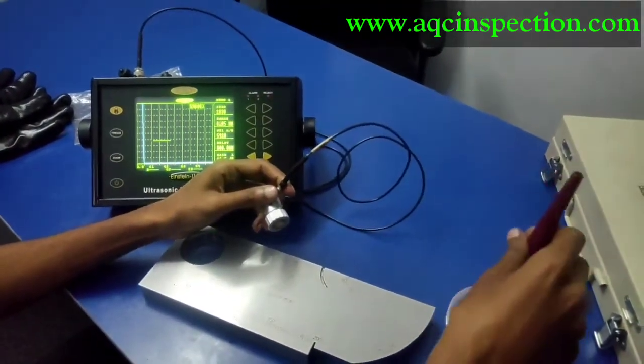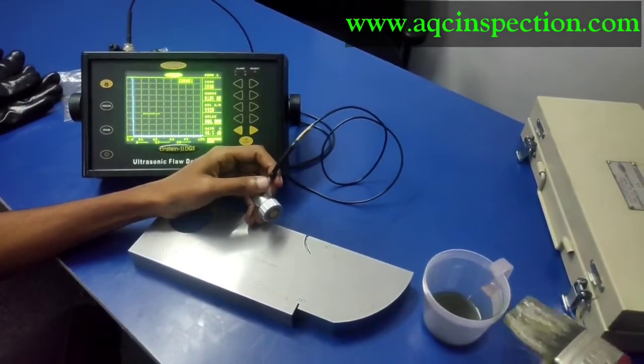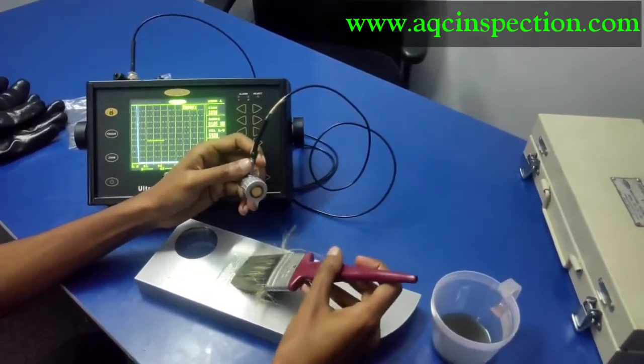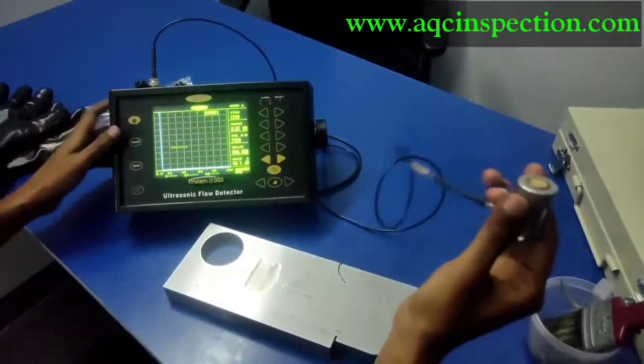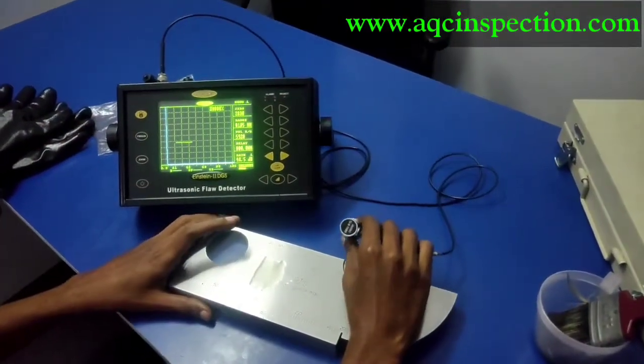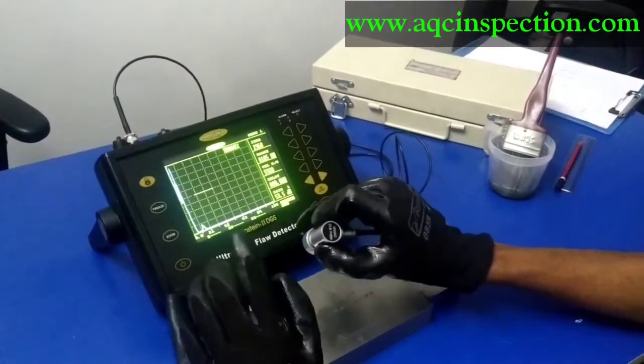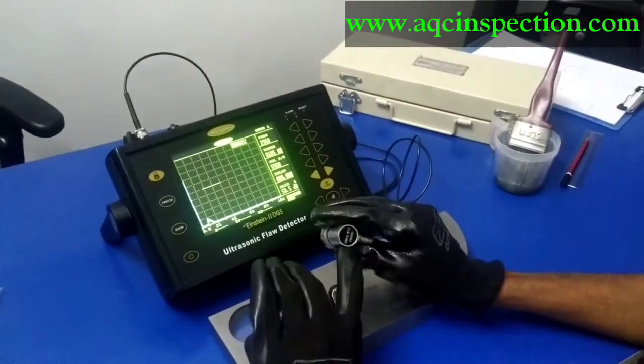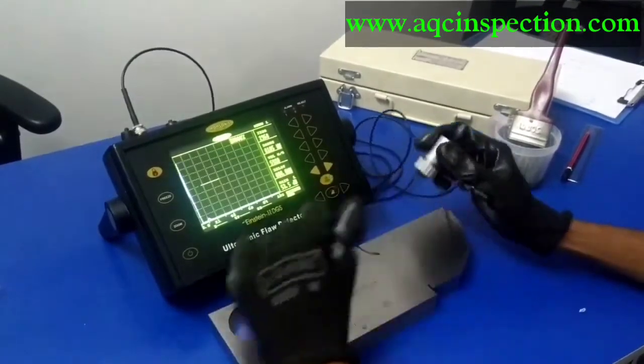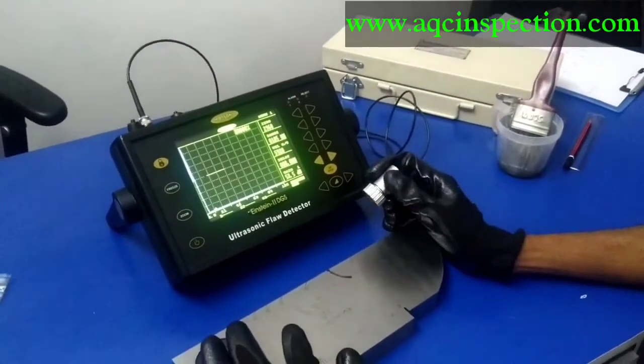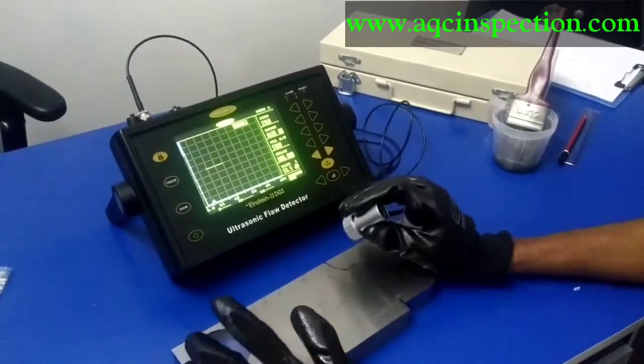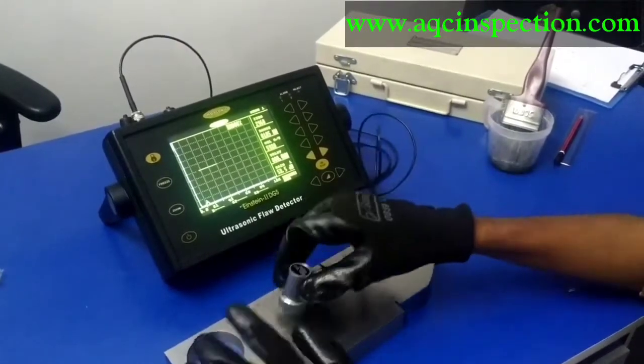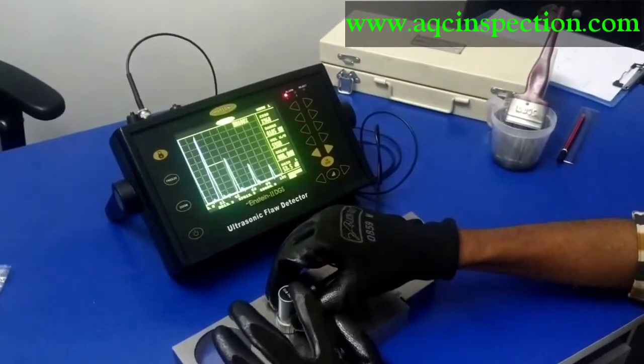First, we have to put a couplant. I am going to use an oil only. Just a 2T oil, normal motor oil. Now we are going to calibrate the 10 mm diameter crystal, 4 MHz frequency transducer using the V1 block right here. I have already applied the couplant. I have put oil, 2T oil, motor oil. So first what I am going to do is place the probe on the V1 block.